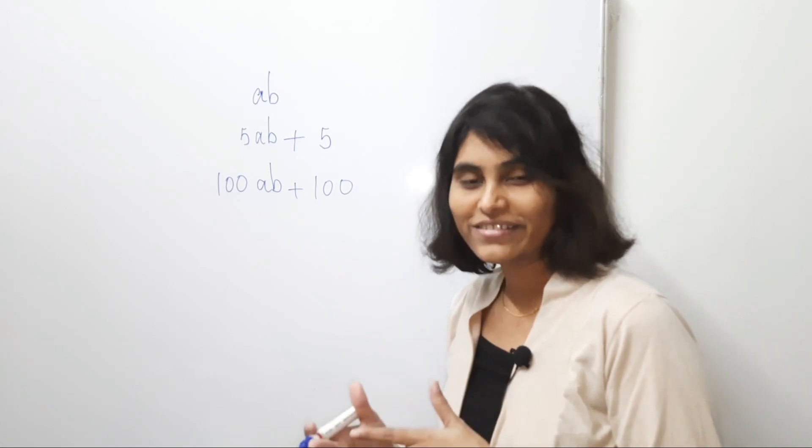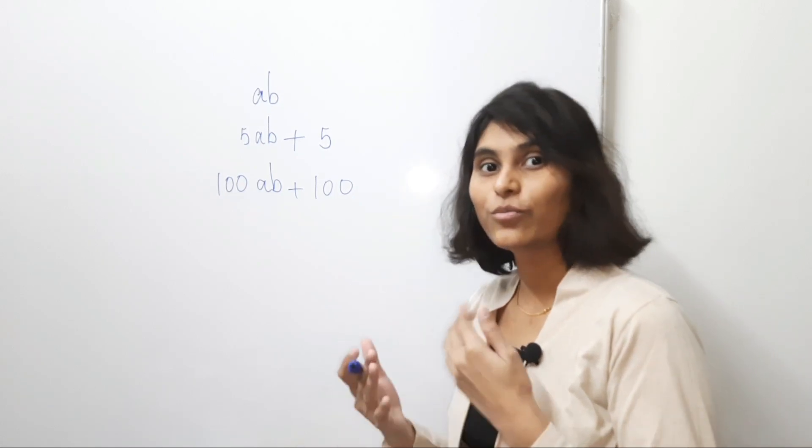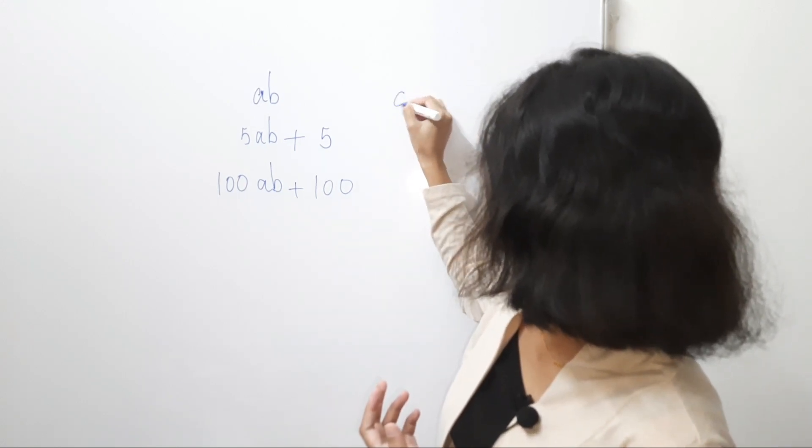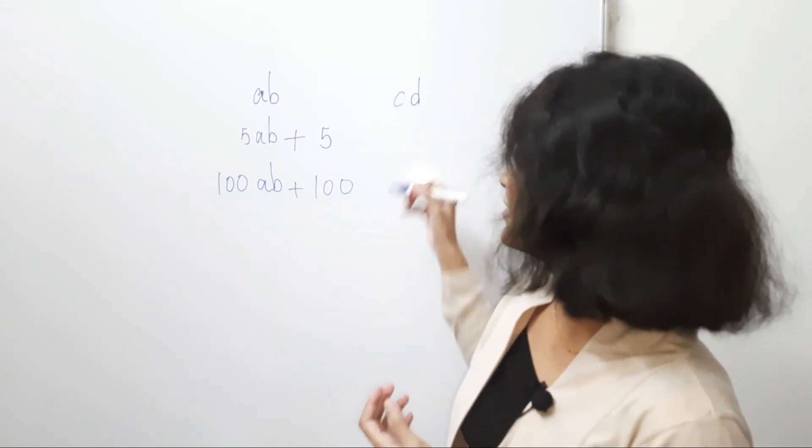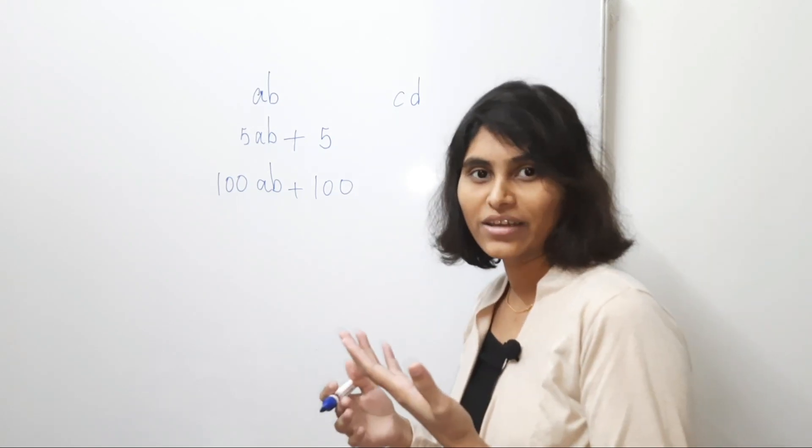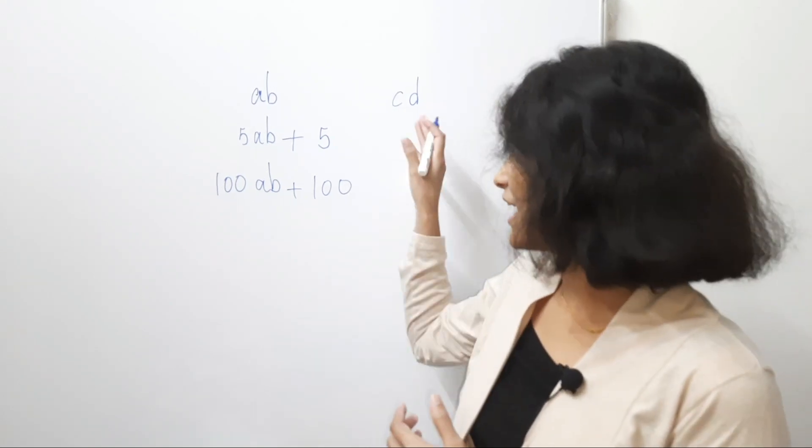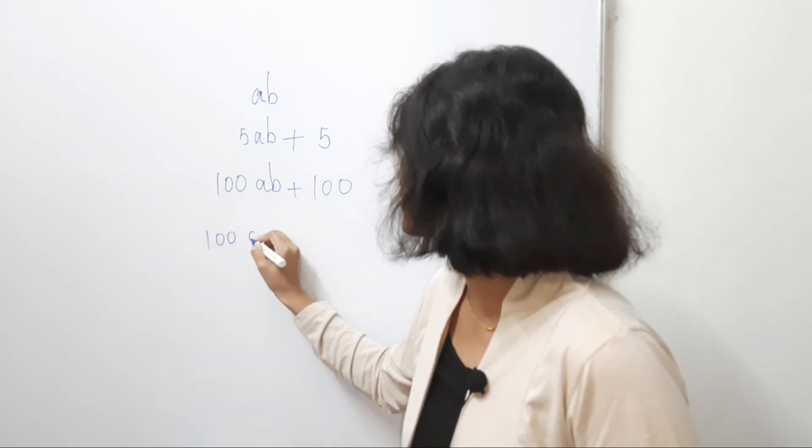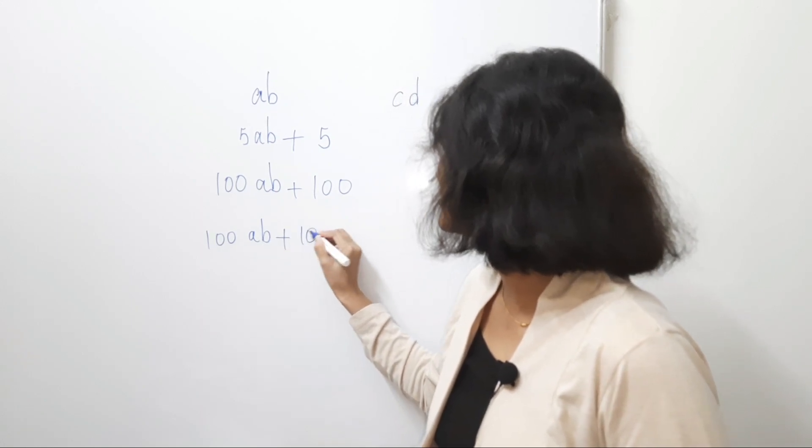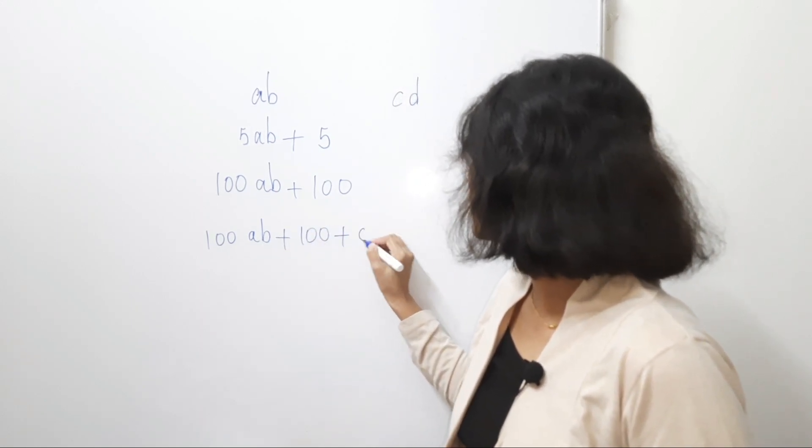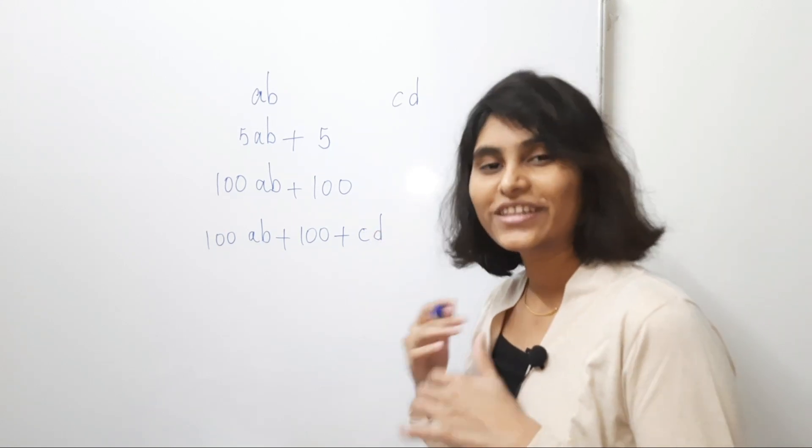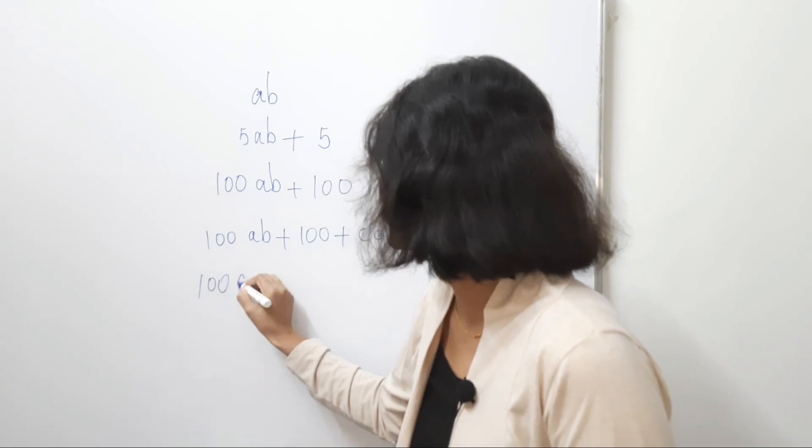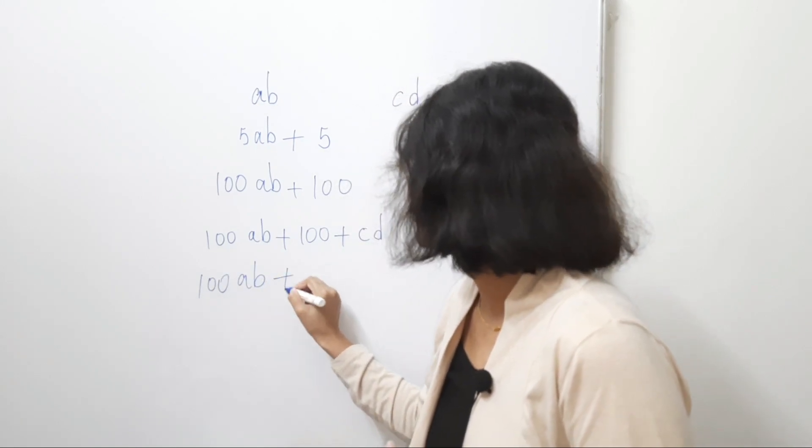Now, the next step is we are adding month of your birthday. Right? So, that month, let's denote this by say CD. That is again a two digit number or it can be a single digit number. So, just add the month of your birth. So, this becomes 100 times AB plus 100 and plus CD. Right? Now, in the next step we are subtracting 100. So, this becomes 100 times AB plus CD. Right?